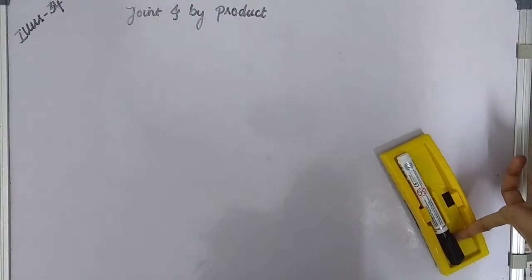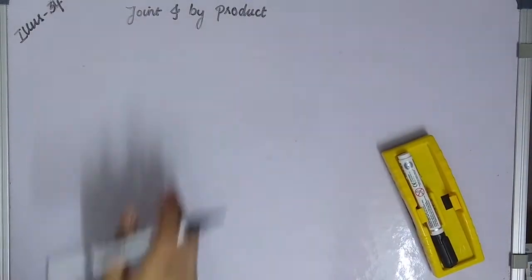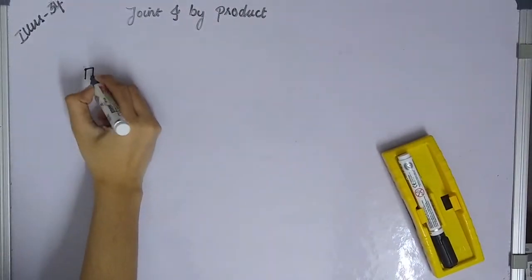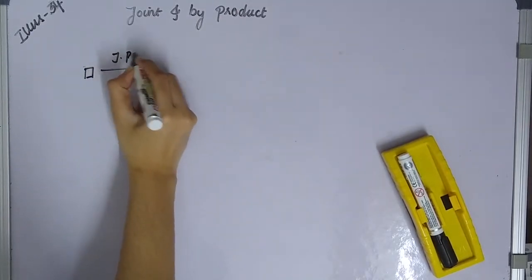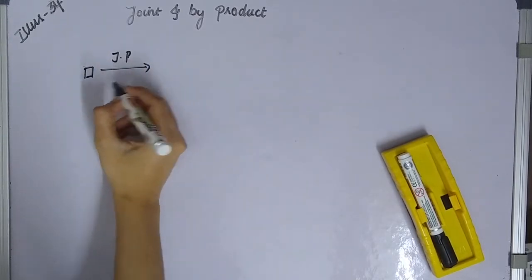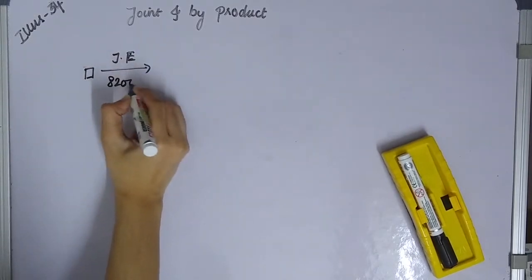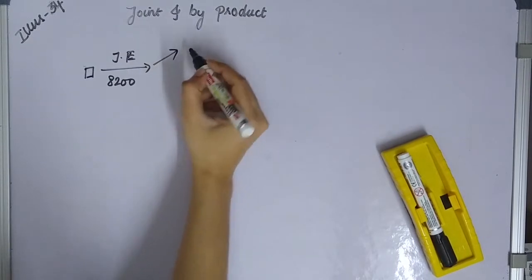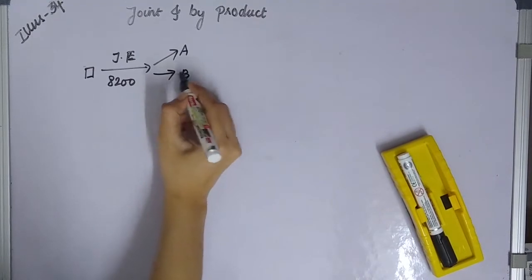Joint expenses are 8,200. The joint product - A is the main product, and B and C are byproducts.